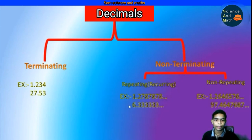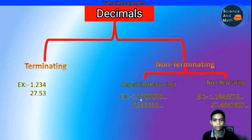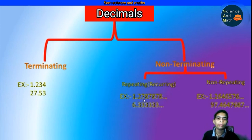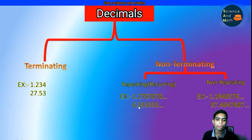There are two types in non-terminating decimals: repeating and non-repeating. In repeating, we can see a set of numbers or one number repeating in the decimal side. For example, 1.2787878... — here 78 is repeating. We can also write it as 1.2̄7̄8̄ with a bar on 78. Similarly, 6.33333... is written as 6.3̄.